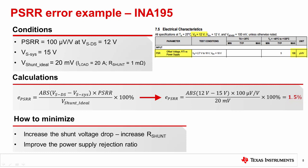The first thing most engineers will ask is: how do we make it better and minimize this error? There are two possible ways to approach this. First, you can increase the shunt voltage, which means increasing the shunt resistance. Second, you can improve the PSRR spec, which requires selecting a different device. Increasing the shunt resistance may or may not be feasible due to cost, board space, or power dissipation concerns. So let's consider option 2 — selecting a different device with a better PSRR spec.